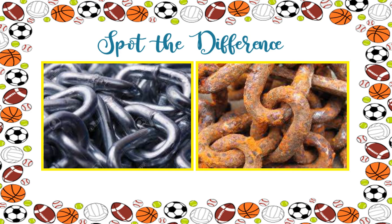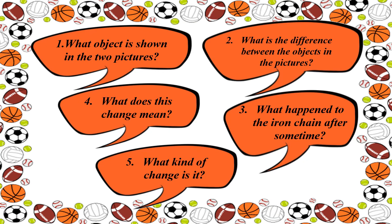Spot the difference of these two pictures. Number 1: What object is shown in the two pictures? Number 2: What is the difference between the objects in the pictures? Number 3: What happened to the iron chain after some time? Number 4: What does this change mean? Number 5: What kind of change is it? Don't forget to write your answers in your activity notebook and submit your answers to your science teacher.